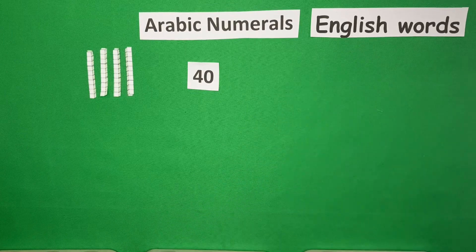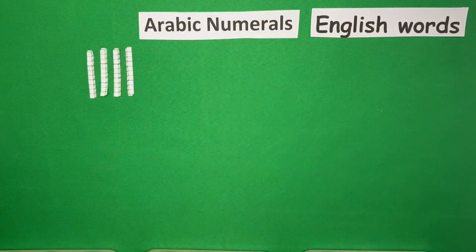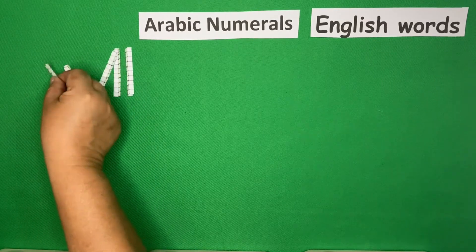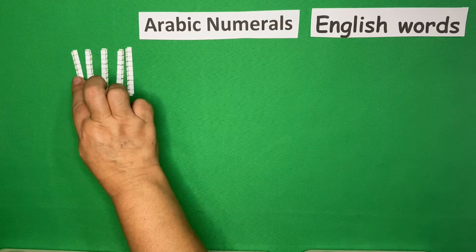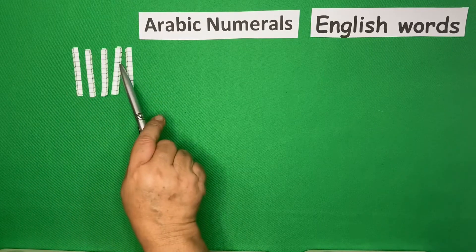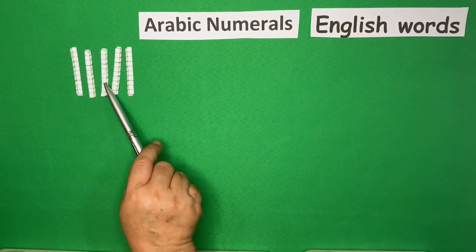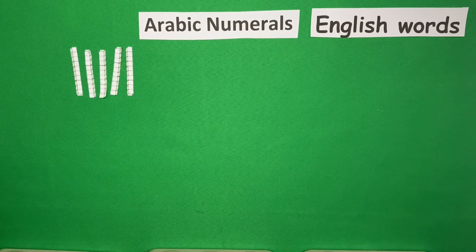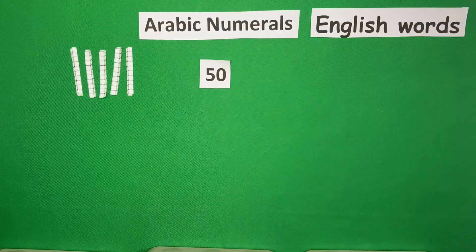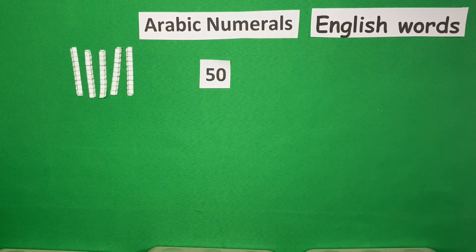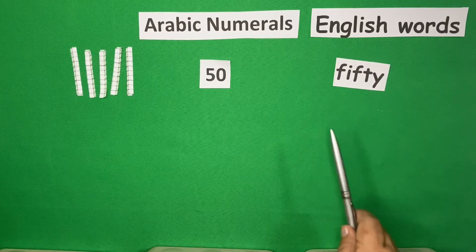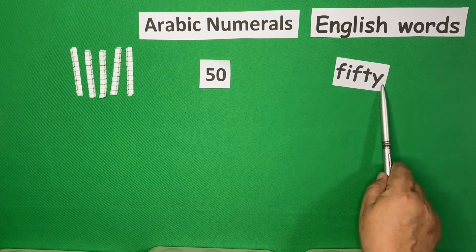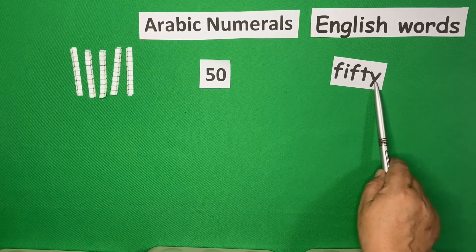And then, if we will add 1 more of this, like this one, we now have 5. So, here, 10, 20, 30, 40, 50. 50 in Arabic is this. And in English is this one. Spell it as F-I-F-T-Y.